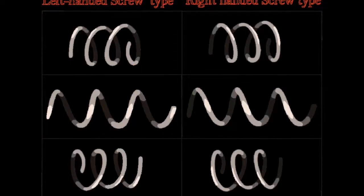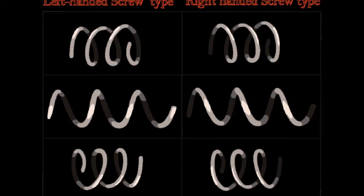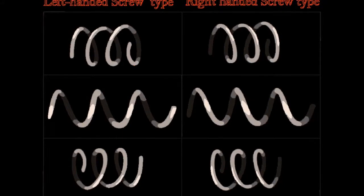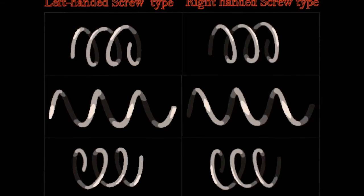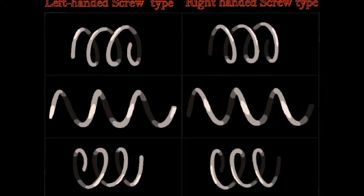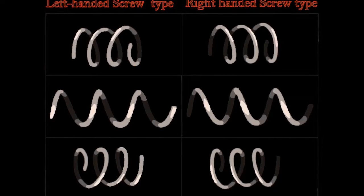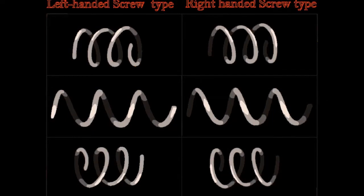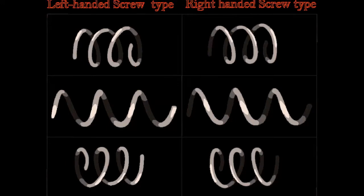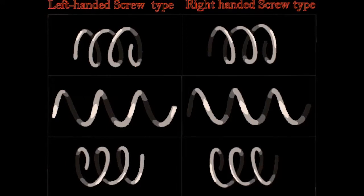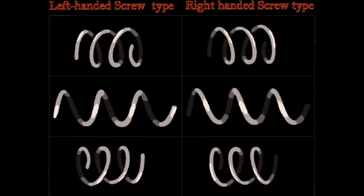Helices can be either right-handed or left-handed. With the line of sight along the helix's axis, if a clockwise screwing motion moves the helix away from the observer, then it is called a right-handed helix; if towards the observer, then it is a left-handed helix.